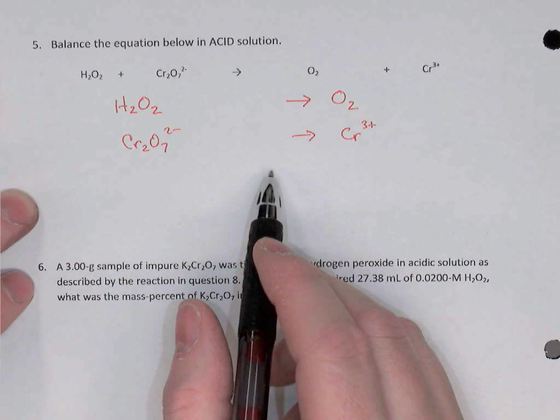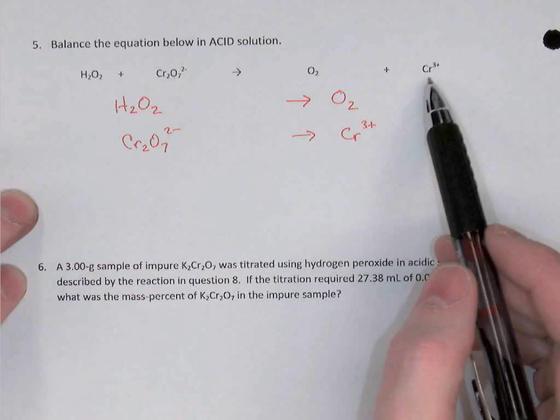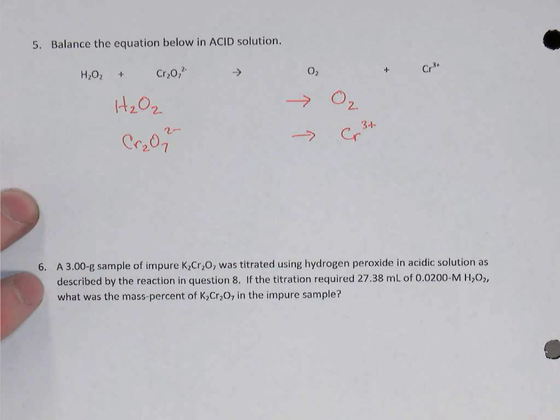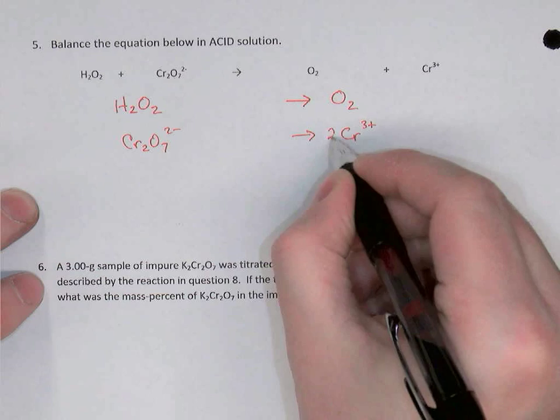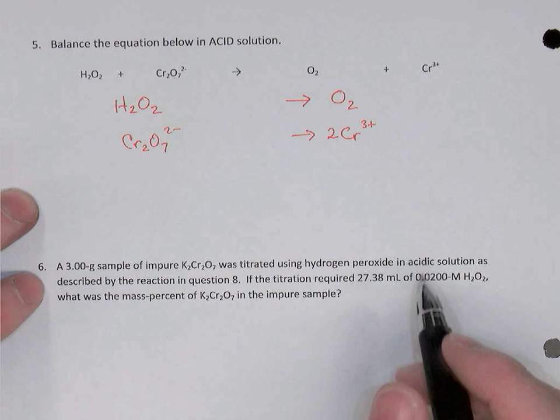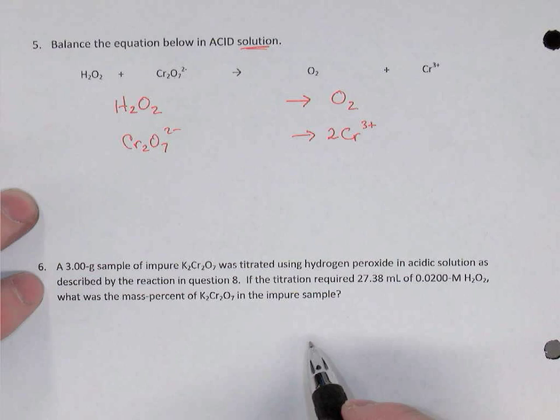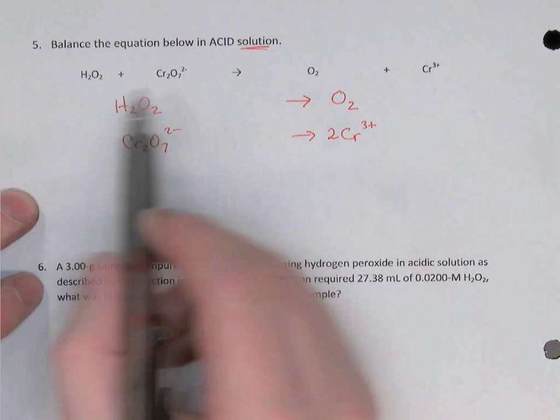After splitting, we go through a series of steps. First, balance anything other than hydrogen and oxygen. The first equation has nothing other than hydrogen and oxygen, so leave it. The second equation needs a 2 in front of chromium to balance the chromiums. Now balance oxygens by adding water — the reaction is happening in solution, so water is present, and we can balance oxygens with H2O.